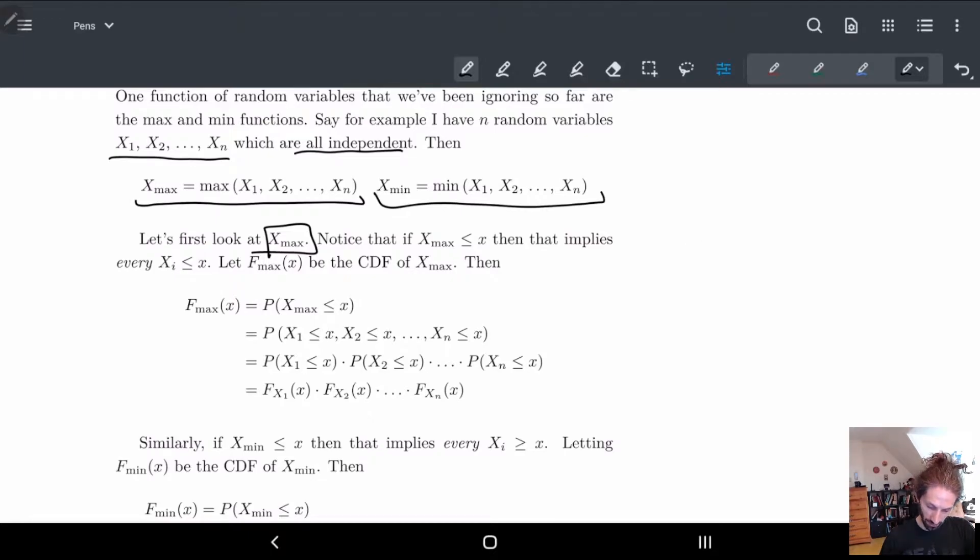What we have is if I want to figure out F max, this is going to be equal to P of x max less than or equal to x. Well, when is this true? x max is less than or equal to x if every xi is less than or equal to x, because this is the maximum. So every single one has to be less than or equal to x.